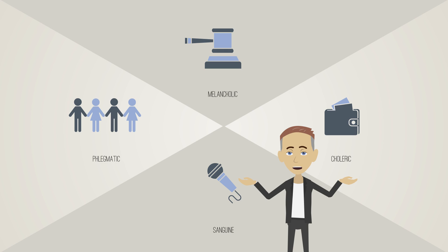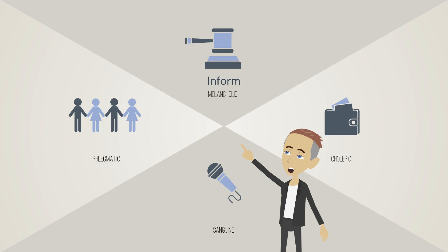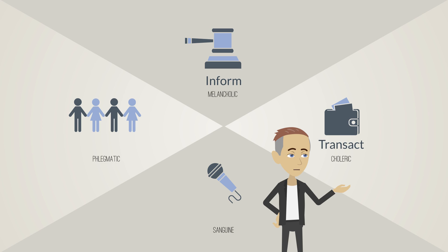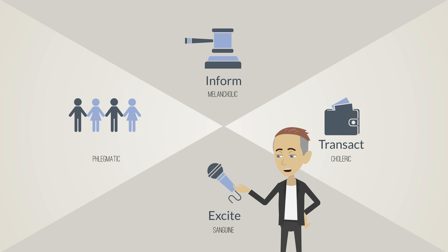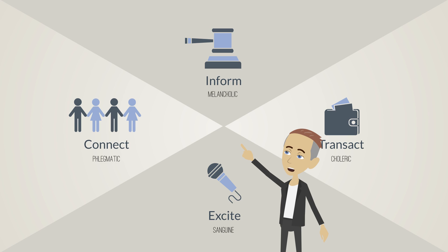To better understand, I have modernized these styles. The first style is Inform — the serious, data-driven, analytical, fact-checking type you may be familiar with. Next is the Transact style: the type-A, very driven colleague who is always on the go. The Excite style is the classic ideas person, always watchful for the entertainment value in the environment. And with the Connect style, we have the people person — the connectors — always sensitive toward matters concerning people.